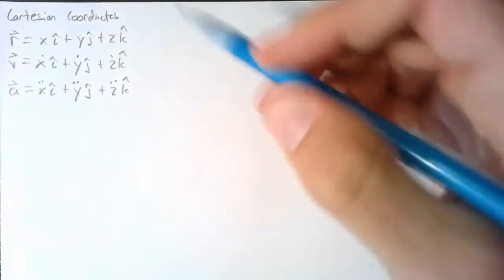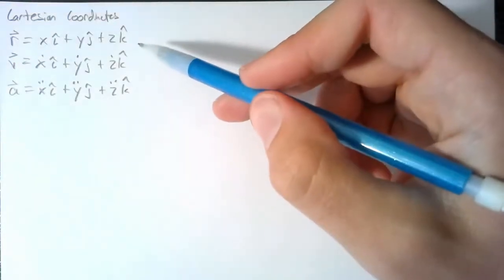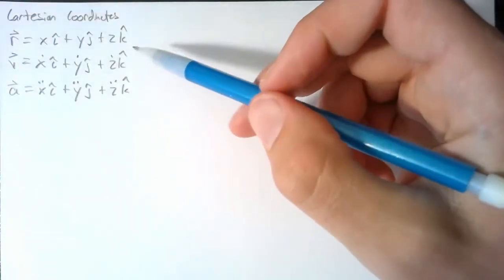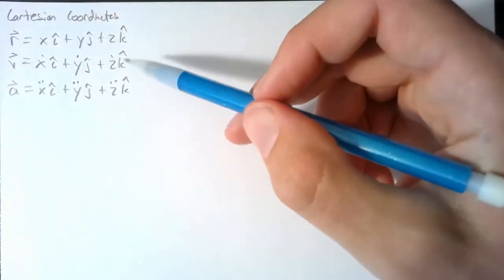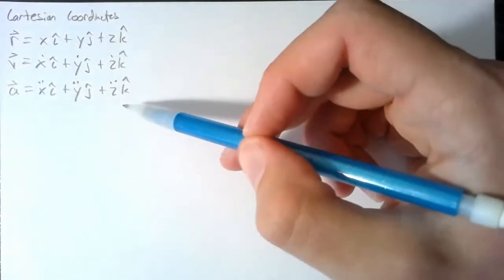As a review, our equations of motion for Cartesian coordinates can be written for position, velocity, and acceleration. Everything is very simple — just taking the time derivative of each of the pieces.